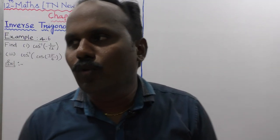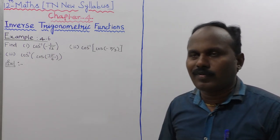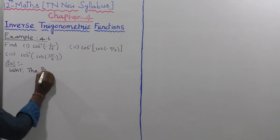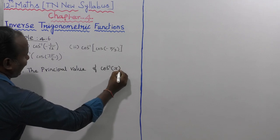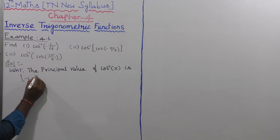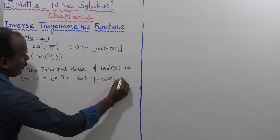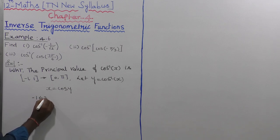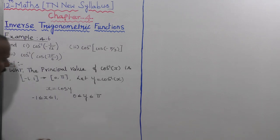For cos inverse of x, the principal value domain is the closed interval [-1, 1] and the range is [0, π]. So we consider y equal to cos inverse of x, which means x equals cos y. The value of x satisfies -1 ≤ x ≤ 1, and y satisfies 0 ≤ y ≤ π.